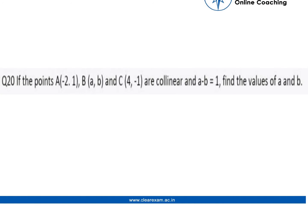Question number 20: If the points A which is (-2, 1), B which is (a, b), and C which is (4, -1) are collinear, and it is given that a minus b equals 1, we have to find the values of a and b.